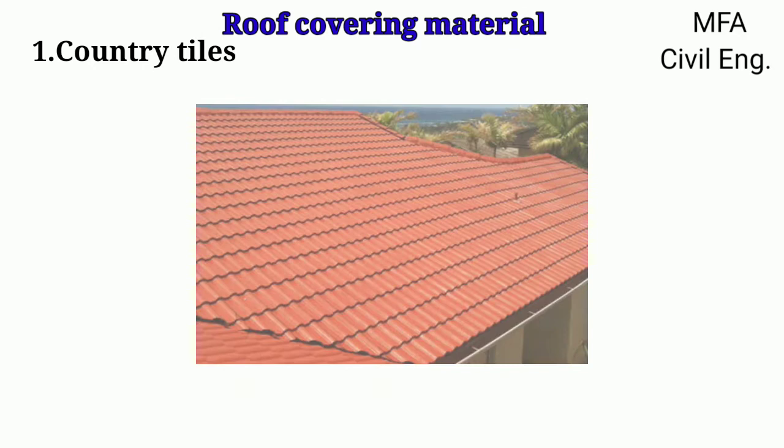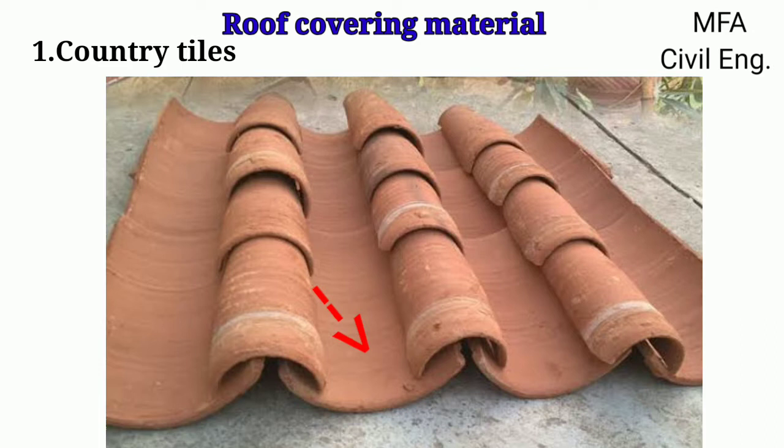These tiles are laid in a pair of under tiles, that is a concave surface upward, and over tiles, that is a concave surface downward, with a proper overlap of at least 8 cm on all sides.